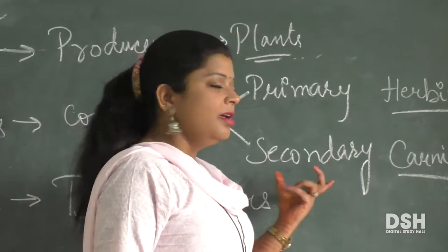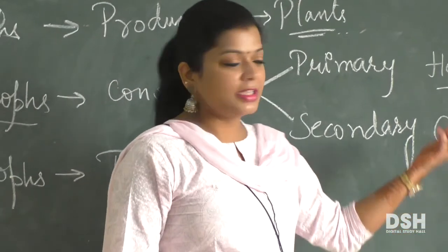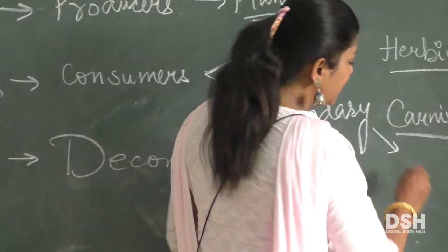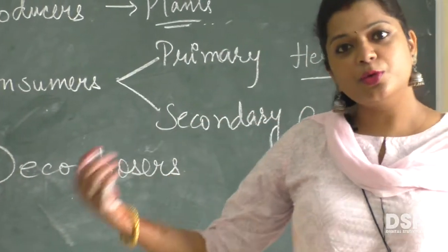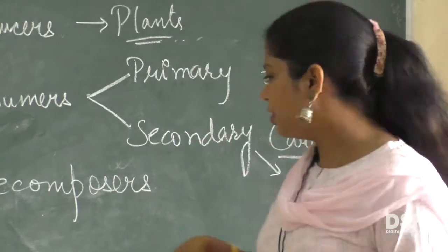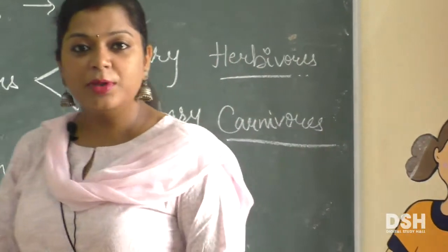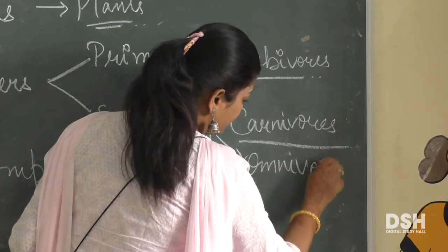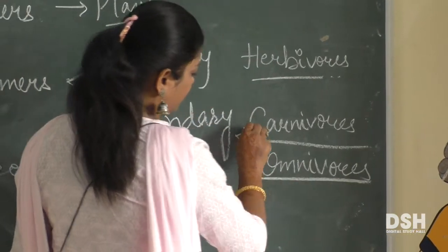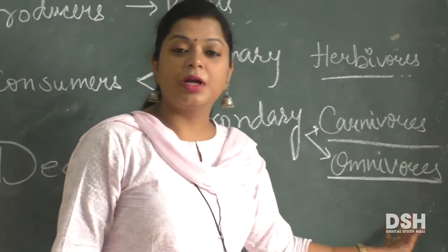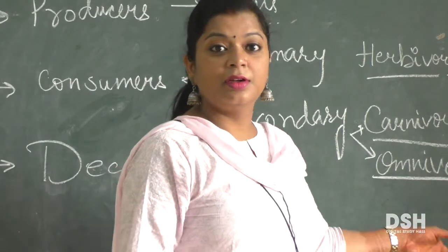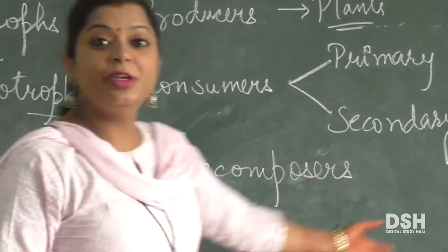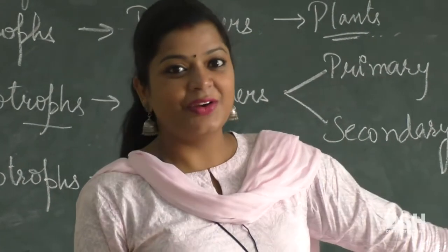These are our secondary consumers or carnivores. Then we come to omnivores. Omnivores eat both plants and animals — they eat plants like herbivores and animals like carnivores, so we call them omnivores. For example, bear, monkey, and also human beings.